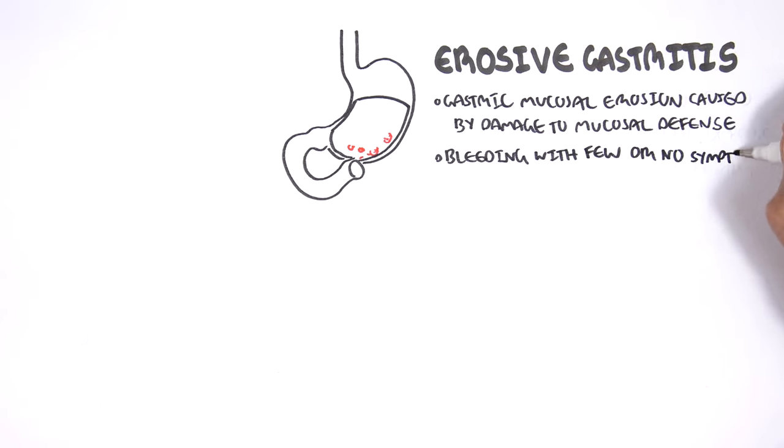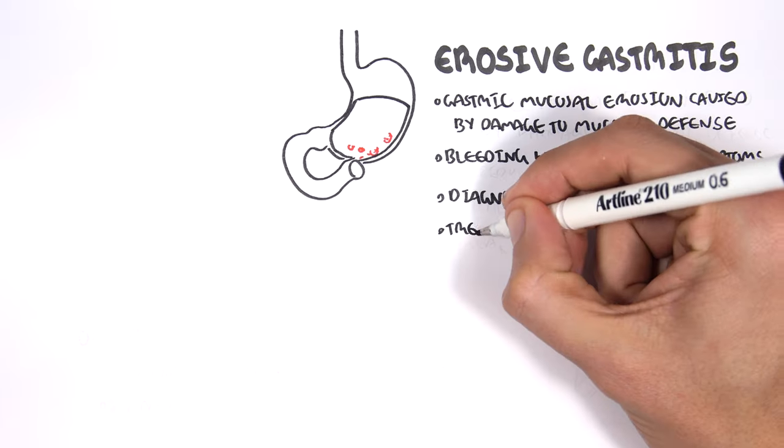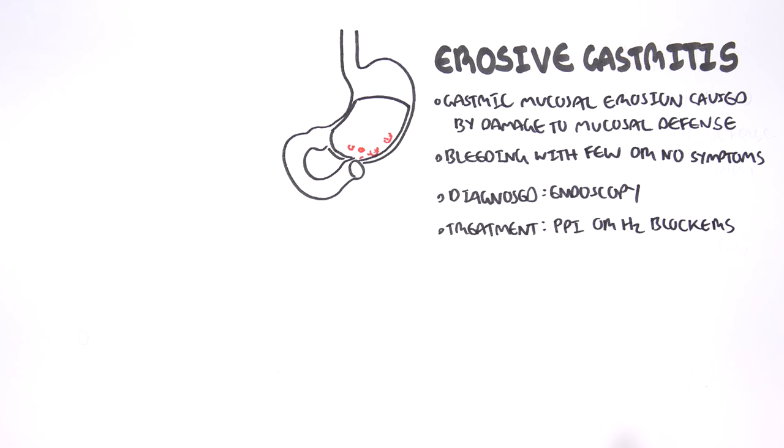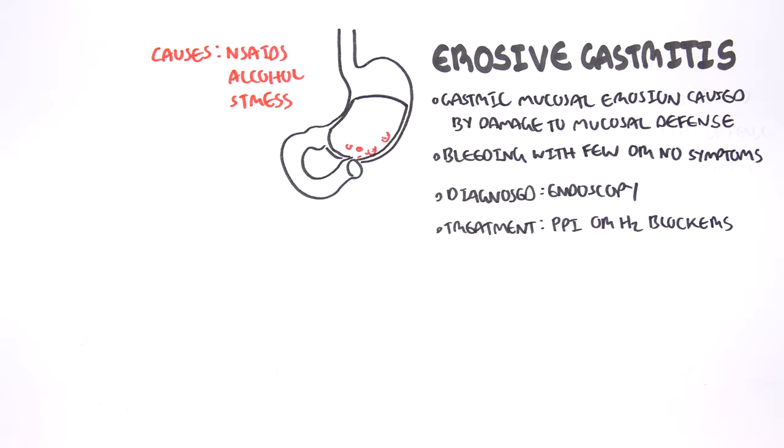We can have bleeding with few or no symptoms. We diagnose it using an endoscope. Treatment includes proton pump inhibitors or H2 blockers, which work by stopping acid secretion. Causes of erosive gastritis include use of NSAIDs, alcohol, and stress.